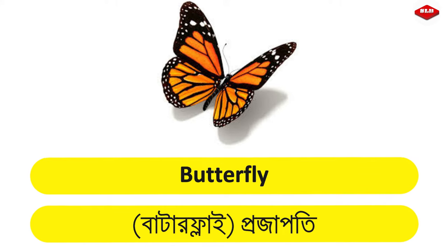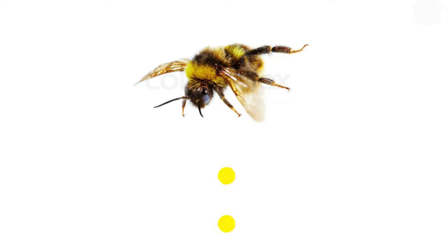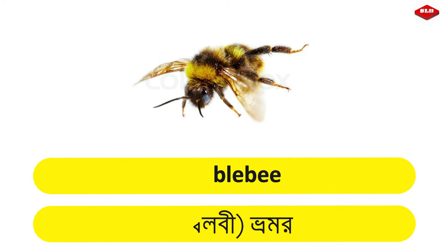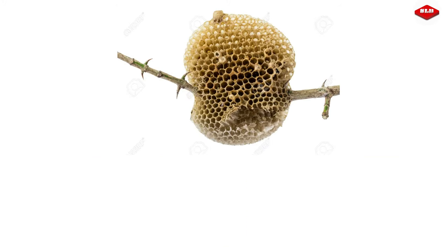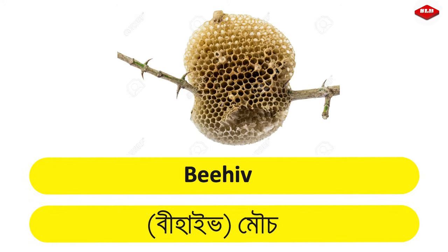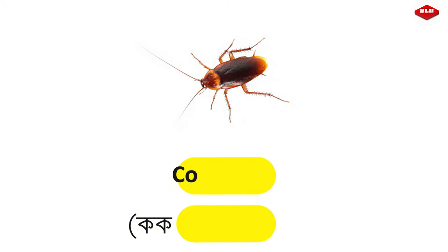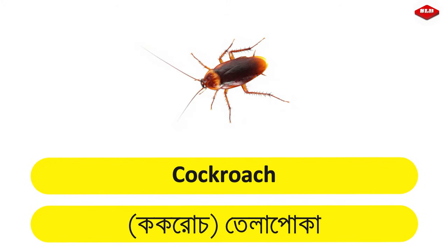Butterfly – Projapoti. Bumblebee – Bromore. Beehive – Mowchak. Cockroach – Telapoka.